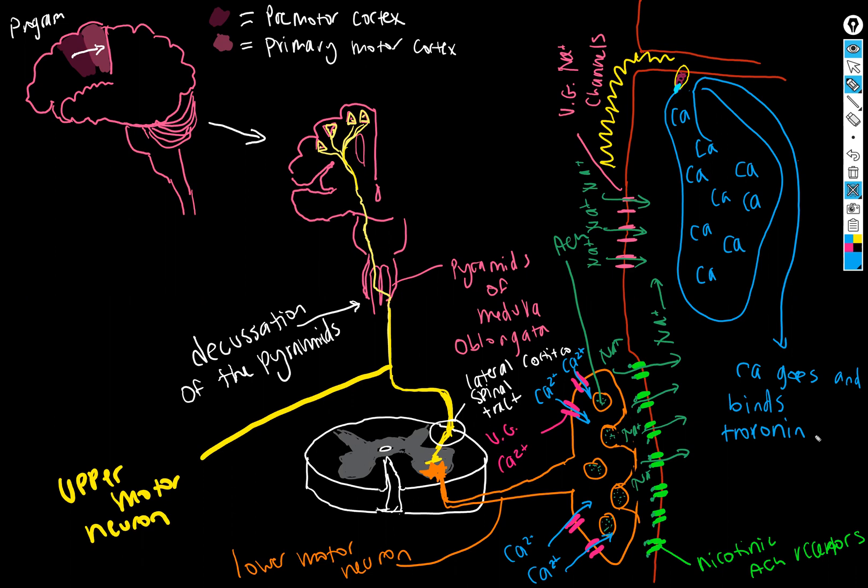And the troponin moves off the tropomyosin, revealing the F-actin active site. Myosin, assuming it's got enough ATP, is going to be in the cocked position and ready to form a crossbridge. And then you get muscle contraction.